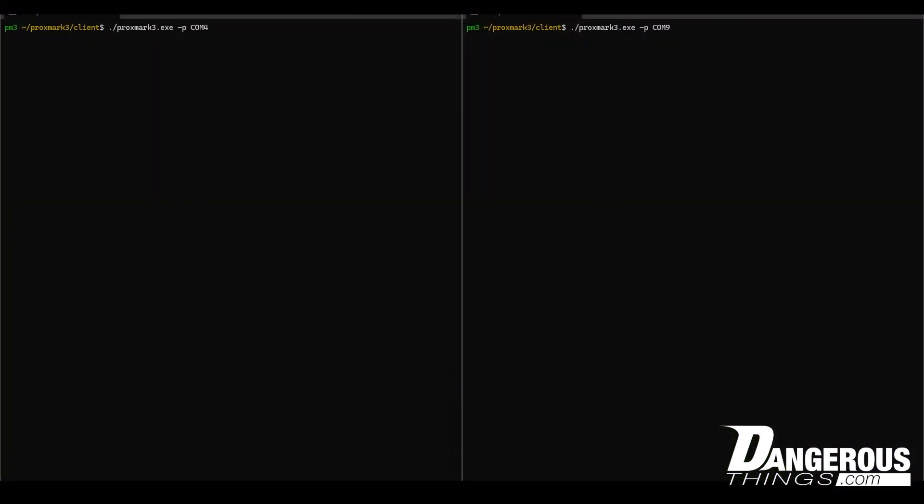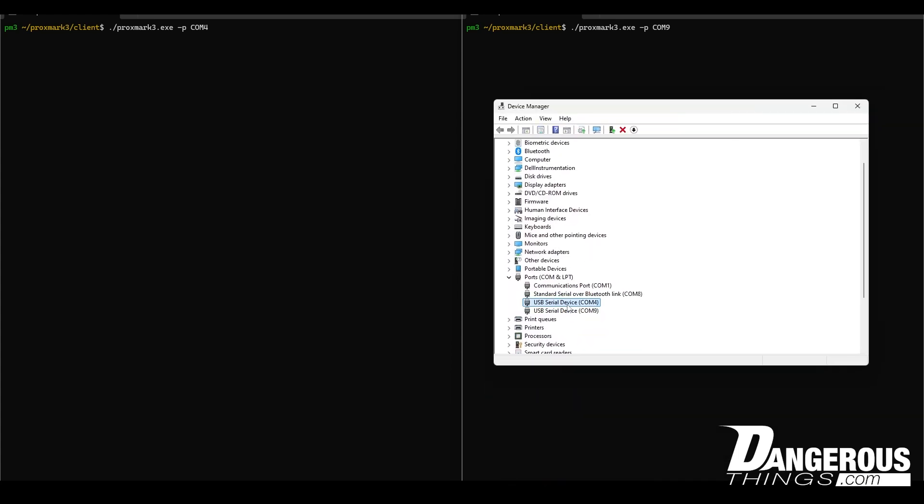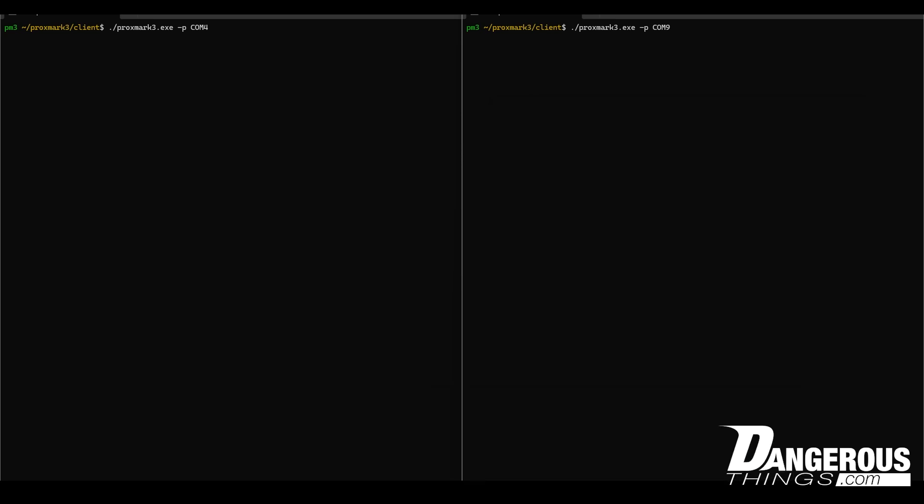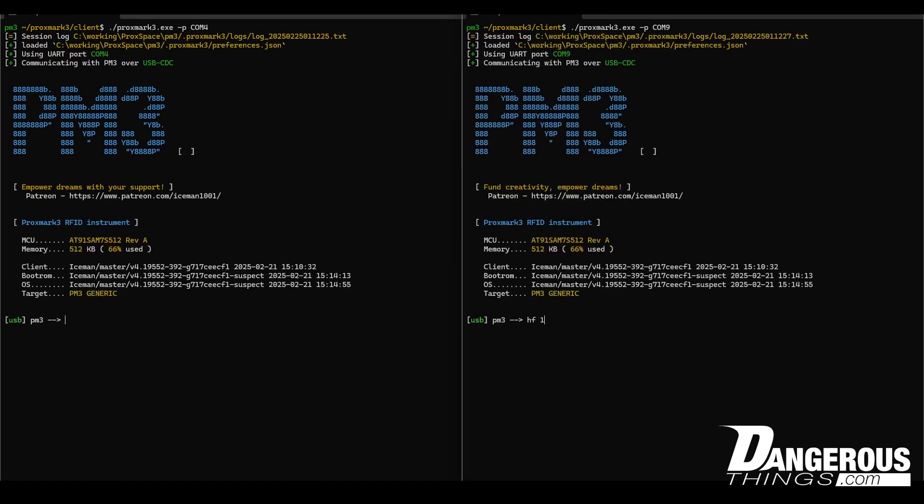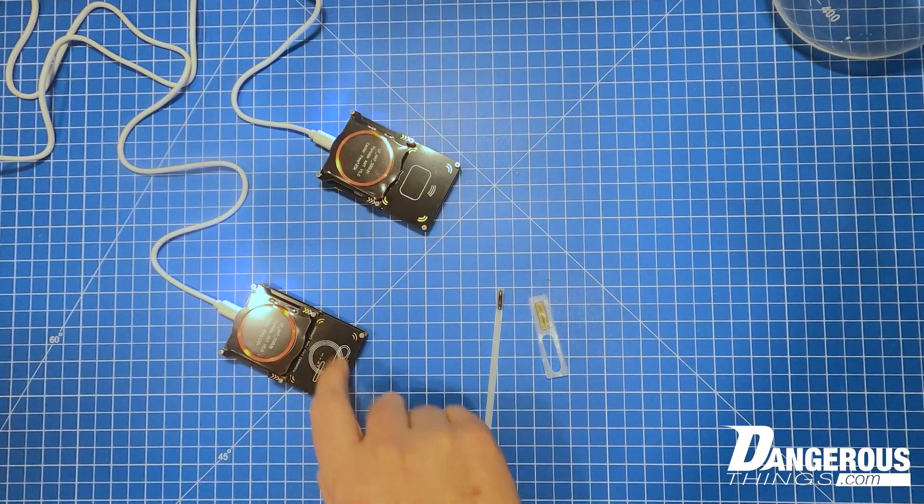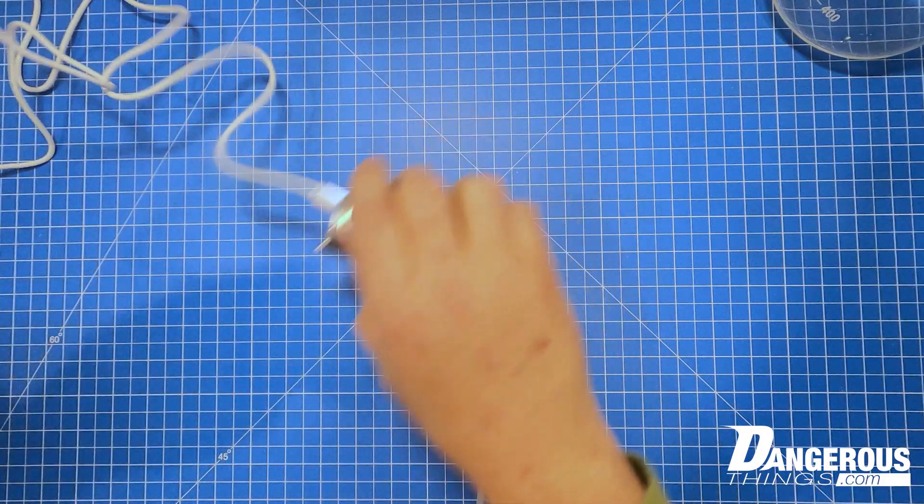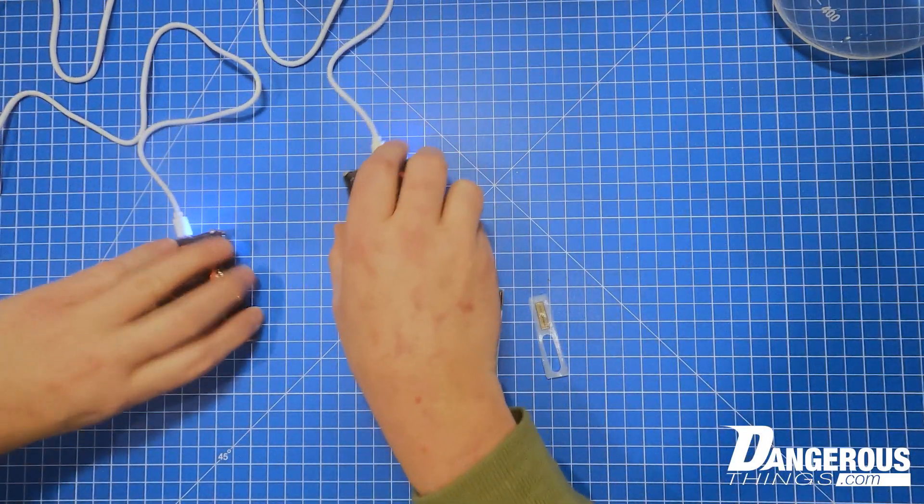Now we're going to do a comparison between the Proxmark with the booster board installed and the Proxmark without, so stock Proxmark. I've got them both hooked up here. When you have two or more Proxmarks set up on your computer, you're not going to use the pm3 script to launch. You need to use the client to specify the port. Looking at the device manager, I can see these two devices are the Proxmarks, COM4 and COM9. We'll launch that client on COM4 and watch this one on COM9. Booster board on the right, stock on the left.